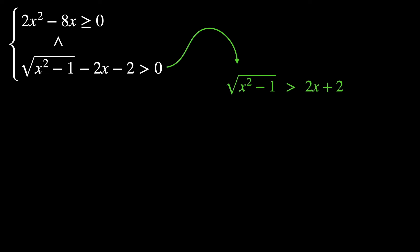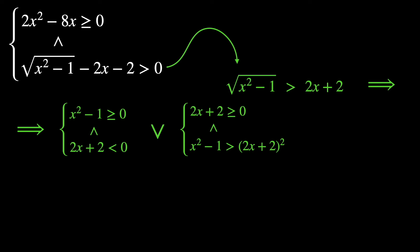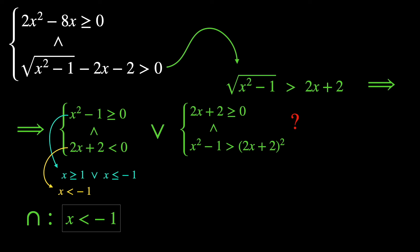The next inequality gives us √(x²−1) > 2x+2. Squaring both sides here is tempting but not correct. Instead, this inequality holds either when x²−1 ≥ 0 and 2x+2 < 0, or when 2x+2 ≥ 0 and x²−1 > (2x+2)². Can you tell why? Let me know in the comments. The first case gives x ≥ 1 or x ≤ −1, and the second gives x < −1. Performing the intersection, we get x < −1 for the first system.